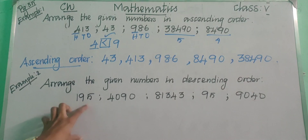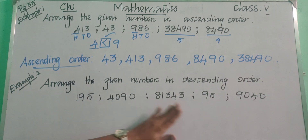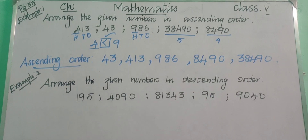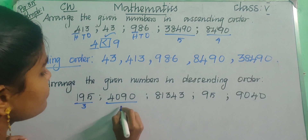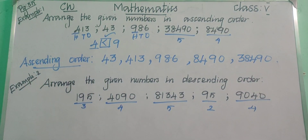The numbers given are 195, 4,090, 81,343, 95 and 9,040. Descending order means we need to arrange the numbers from greatest to smallest. First count the number of digits: 195 is a 3-digit number, 4,090 is a 4-digit number, 81,343 is a 5-digit number, 95 is a 2-digit number, and 9,040 is a 4-digit number.